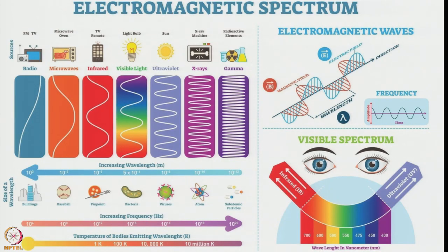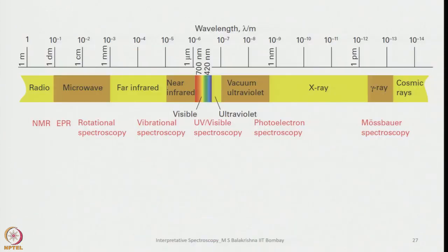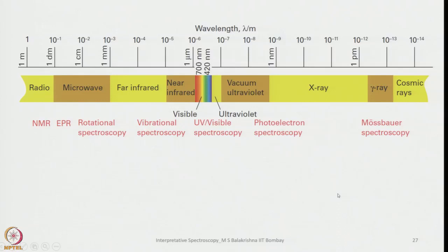The different types of electromagnetic radiation used in different instruments are shown here. Microwave radiation is used in EPR and rotation spectroscopy. Radio waves are used in NMR. Infrared is used in vibrational spectroscopy. Near-infrared through vacuum UV is used in UV-visible spectroscopy and also photoelectron spectroscopy. X-rays and gamma rays are used in Mössbauer spectroscopy for looking into nuclear transitions.